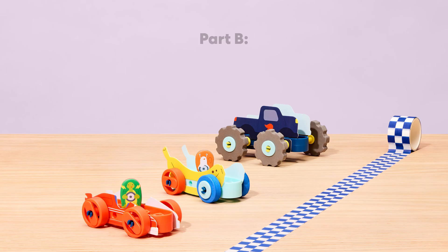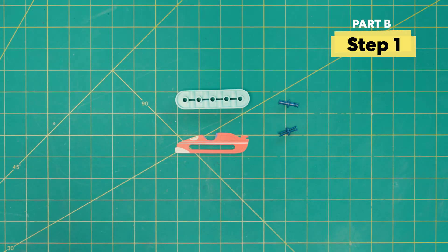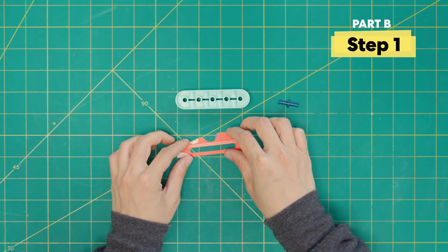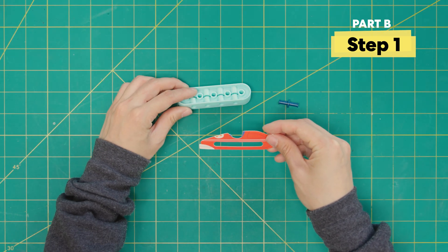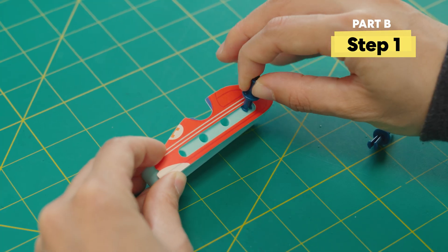And now we're on to part B, making your own stunt cars. I'm really excited for this part. Now for part B, there's a lot of cars to choose from, but we're going to start with this one. We're going to place the car skin onto one side of the body and we're going to hold it in place with these axles.